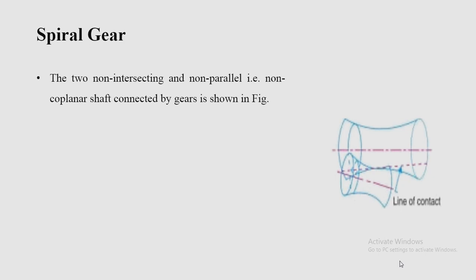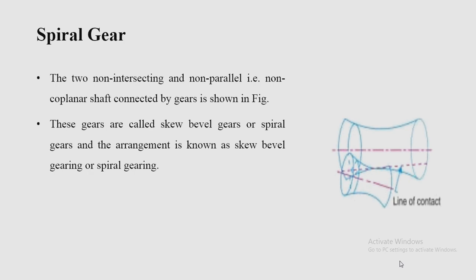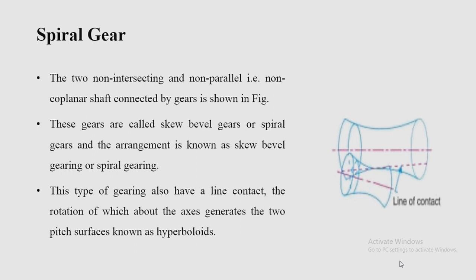In spiral gears, two non-intersecting and non-parallel — that is, non-coplanar — shafts are connected by gears. Unlike bevel gears which are coplanar, spiral gears are non-coplanar. These gears are called skew bevel gears or spiral gears, and the arrangement is known as skew bevel gearing or spiral gearing. This type of gearing has line contact, and rotation about the axis generates two pitch surfaces known as hyperboloids.